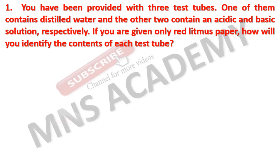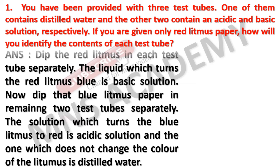You have been provided with three test tubes. One contains distilled water and the other two contain an acidic and basic solution respectively. If you are given only red litmus paper, how will you identify the contents of each test tube? Dip the red litmus in each test tube separately. The liquid which turns red litmus to blue is the basic solution. Now dip that blue litmus paper in the remaining two test tubes. The solution which turns blue litmus to red is the acidic solution, and the one which does not change the color of the litmus is distilled water.